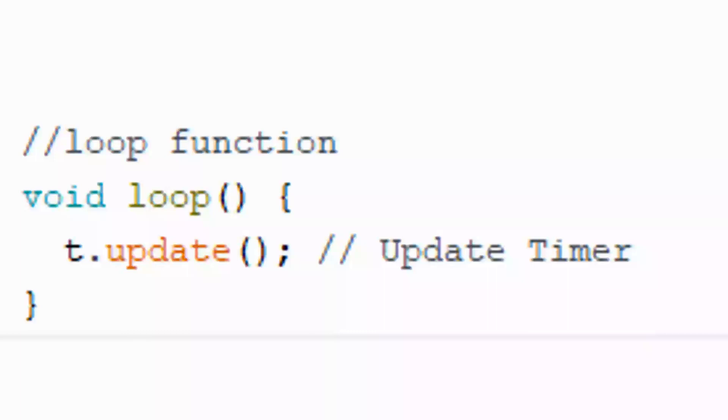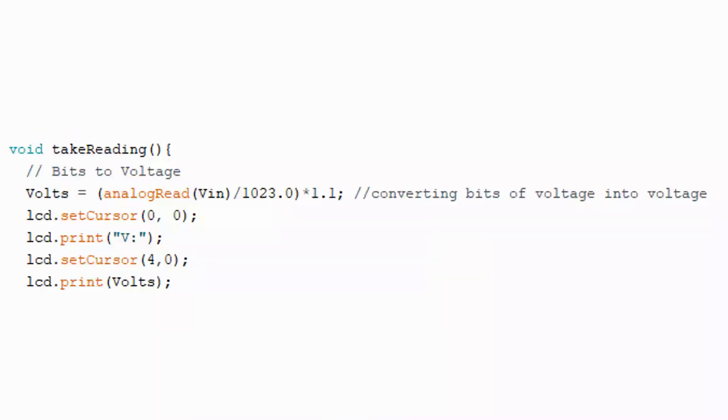In the loop function, only one function is called: t.update. This function takes reading every 100 milliseconds by calling the function takeReading. The first syntax: volt equals analogRead(pin) divided by 1023 times 1.1. Here 1.1 refers to 1.1 volt internal reference and 1023 refers to 10-bit output of voltage. This syntax converts the bits into voltage and displays over LCD.